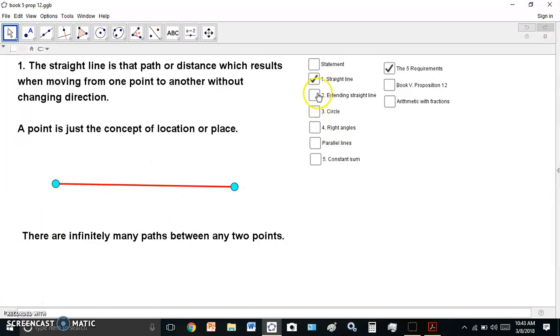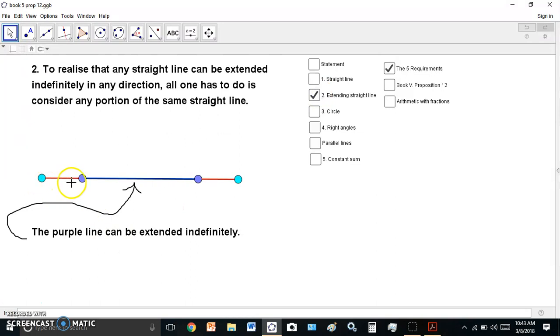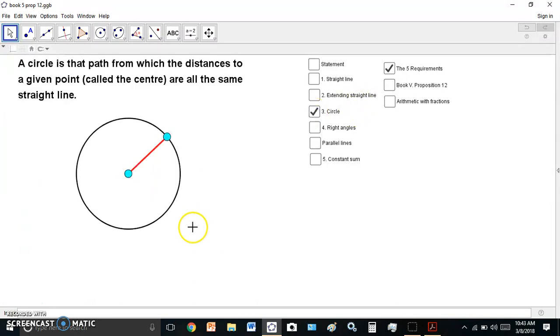We saw that in the first requirement, and then we saw in the second requirement that we could extend a line indefinitely, just as we can reduce it indefinitely, without these two points coinciding. In other words, the locations are different. We also looked at the circle, which is the shortest given path, such that all the distances from the path to the center are the same.